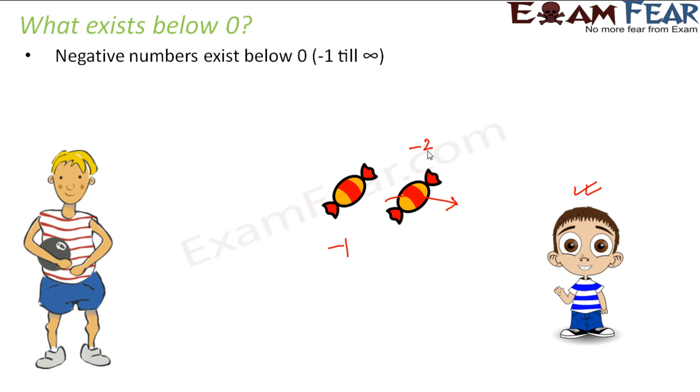This was very interesting. Now the question was: first we had only natural numbers, then we included whole numbers for zero. So now what should we do in order to include these negative numbers also?